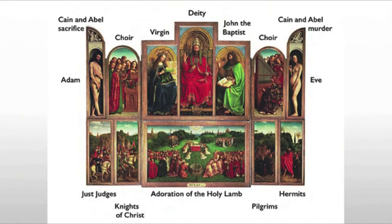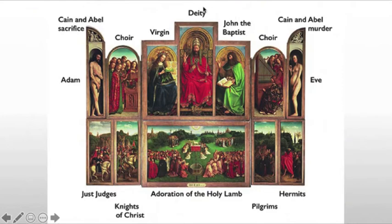Inside, we have a series of images depicting the redemption of man through Christ. We see the sacrifice of Cain and Abel and the murder of Abel by Cain in those very upper corners. We see Adam and Eve on the outside, choirs of angels, John the Baptist, the deity, the Virgin Mary, and then we see the judges, knights, pilgrims, hermits, and the adoration of the Holy Lamb.